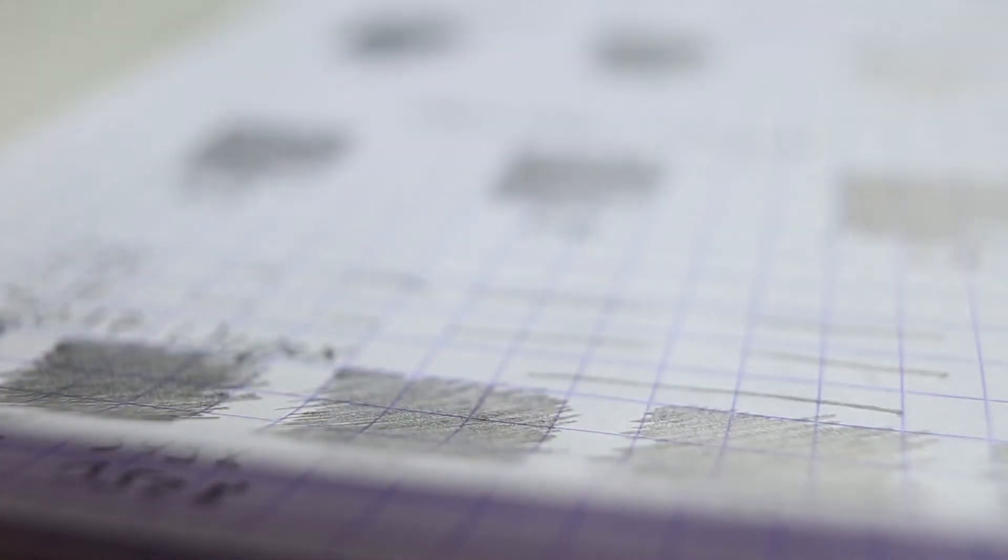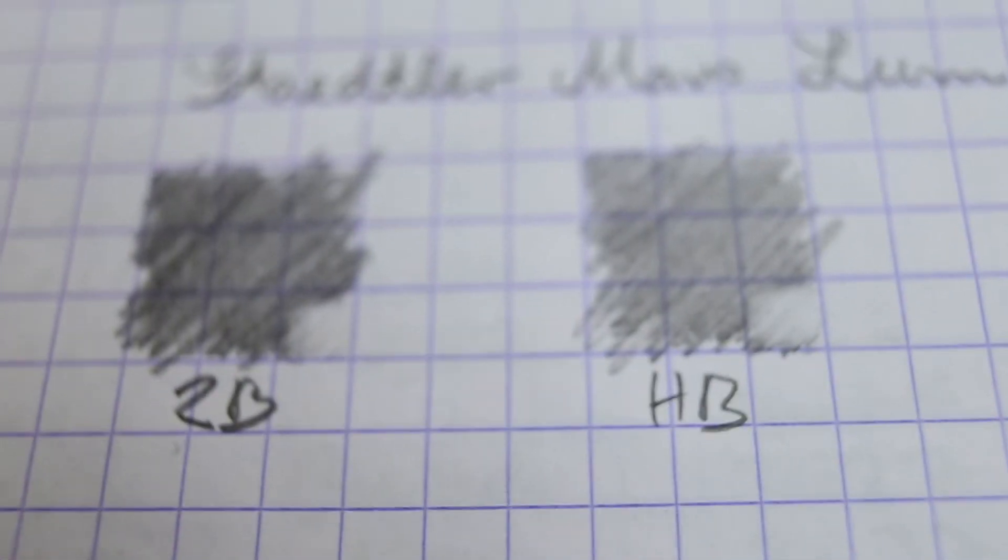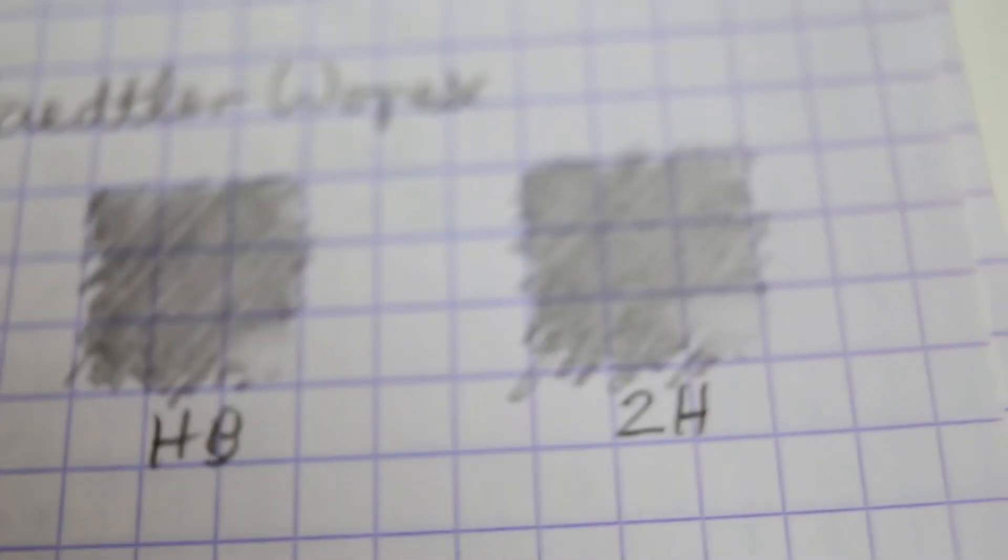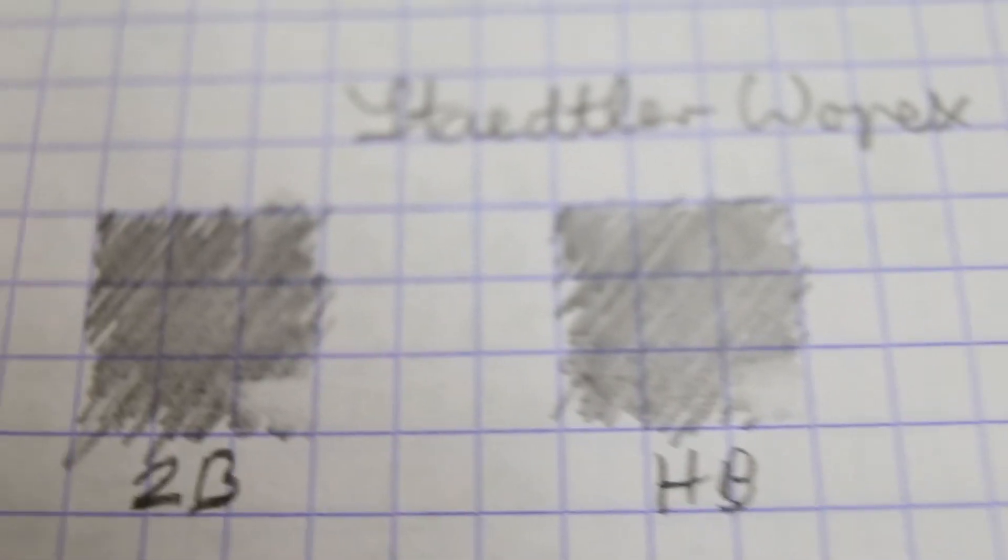And for the old version, there wasn't much of a difference between 2B, HB, and 2H. So not much difference for the old version.